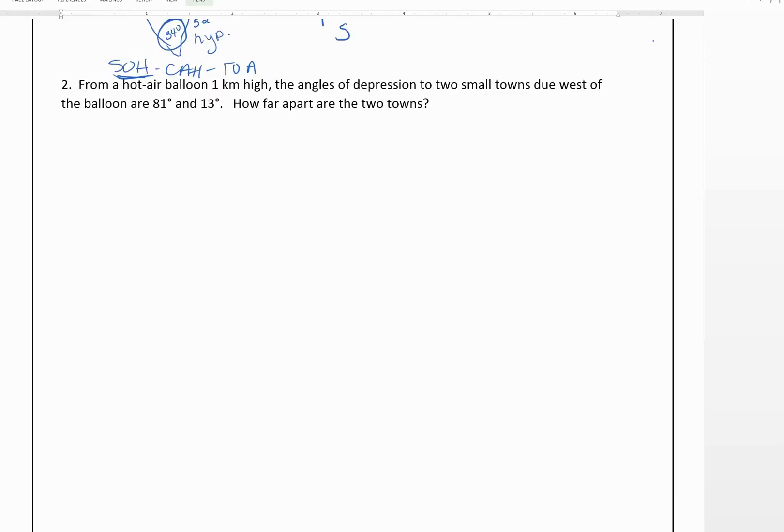Okay, so let's go ahead and draw the situation. So we've got a balloon. All right, not great at drawing hot air balloons. We know that it's one kilometer high. Okay, and we've got two towns. So think of the balloon looking straight ahead. So the first angle of depression, 81 degrees. This would be 81 degrees. So this would be town one, and then the other one is only 13 degrees.